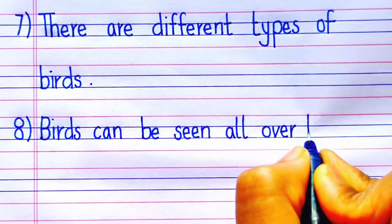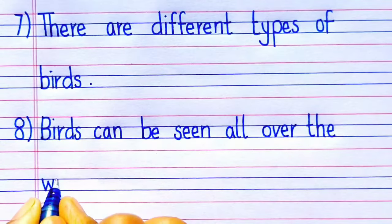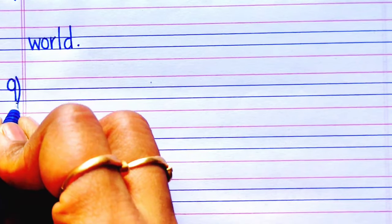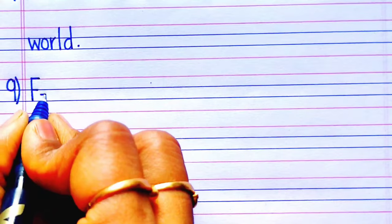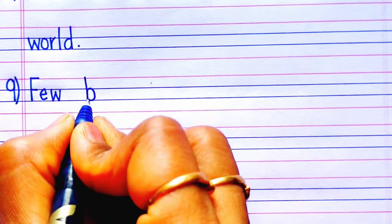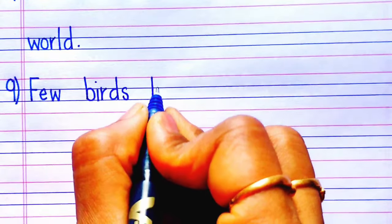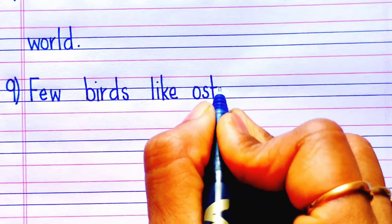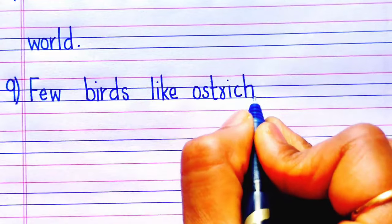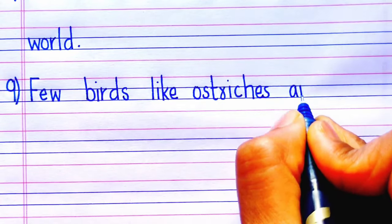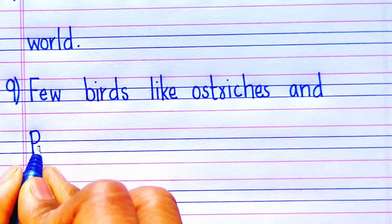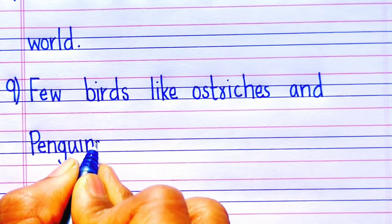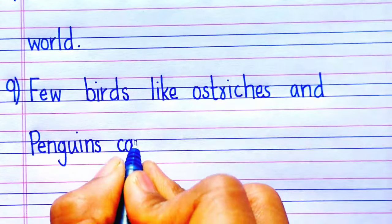The eighth sentence is: birds can be seen all over the world. The ninth sentence is: few birds like ostriches and penguins cannot fly.